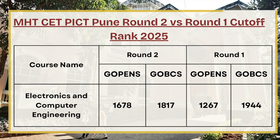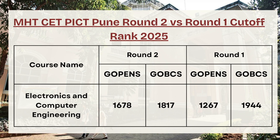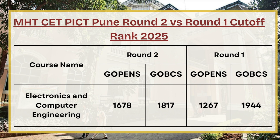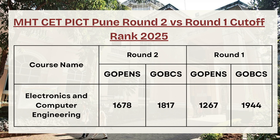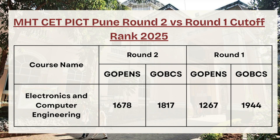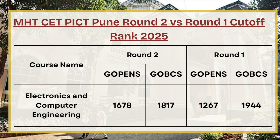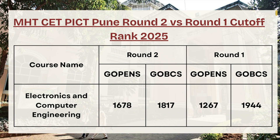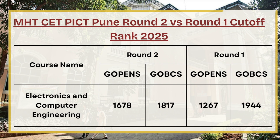Next we have Electronics and Computer Engineering. For G Open category in Round 2 the cutoff rank was 1678, whereas in Round 1 it was 1267, which means there is a gap of 411 points between Round 1 and Round 2. In Round 3, the cutoff can be expected between 1700 to 1900.